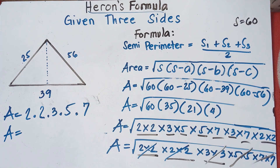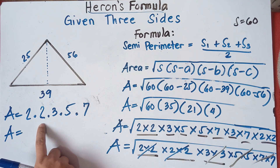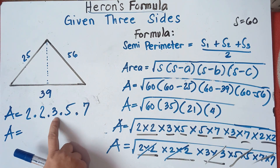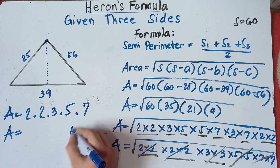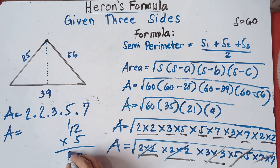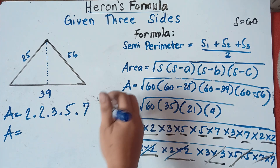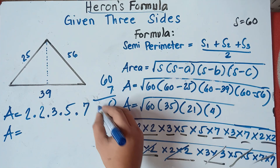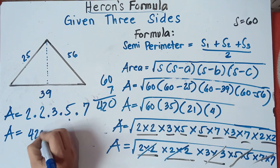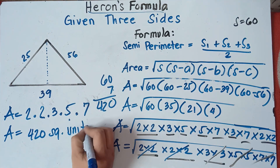So area equals: multiply the numbers outside the radical — 2 times 2 is 4, times 3 is 12, times 5 is 60, times 7 is 420. You get the same answer: 420.